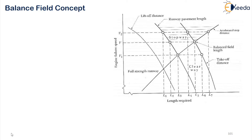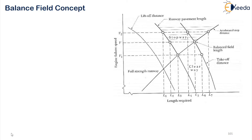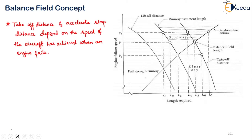To get started with, normally your takeoff distance and the accelerate stop distance will depend upon the speed of the aircraft which has been achieved when an engine fails. Normally the speed at which the engine fails will be decided by the aircraft manufacturer. Such a speed is very critical, as the critical engine failure speed is one of the factors for deciding your runway length, stopway length, and the clearway length.